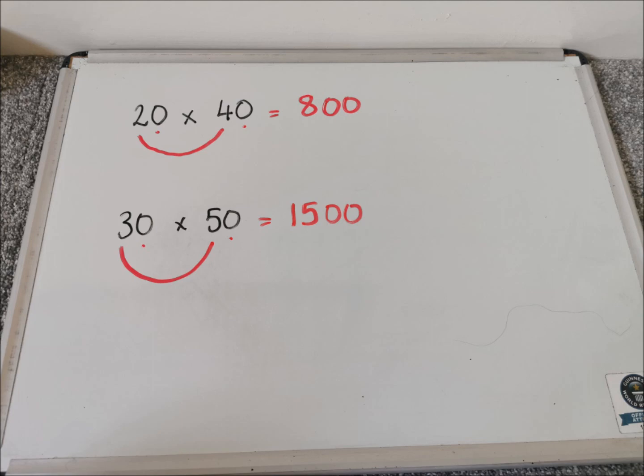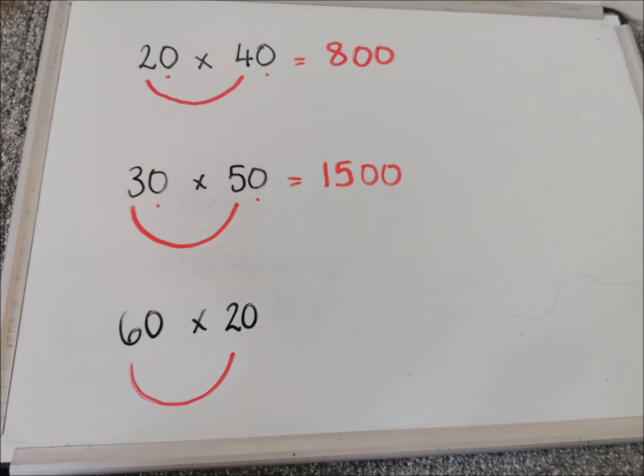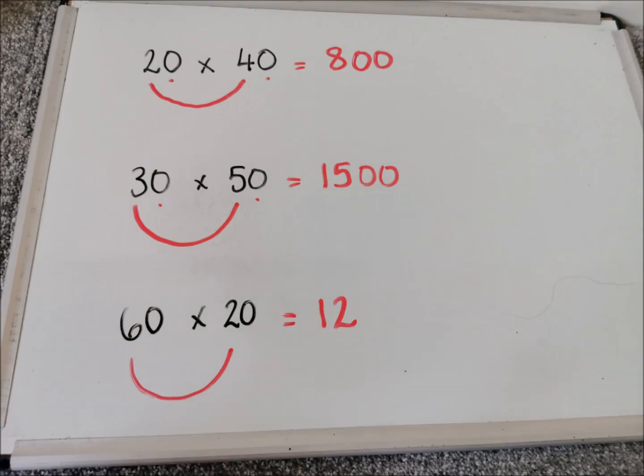We'll do one more together really fast today. And the last one that we've got there is 60 times 20. So I draw my smile underneath 6 and 2. And I do 6 times 2, which is 12. So I can write that as part of my answer straight away.